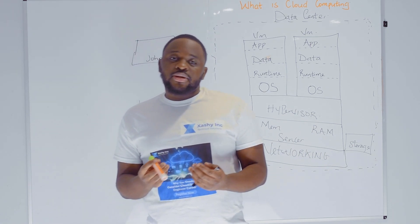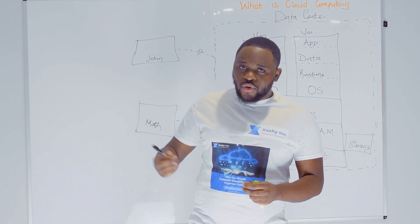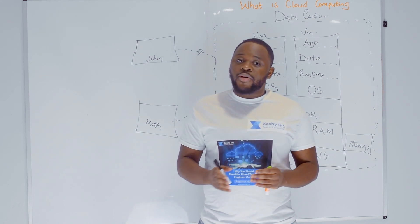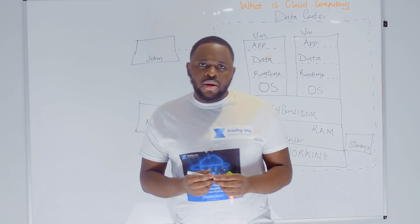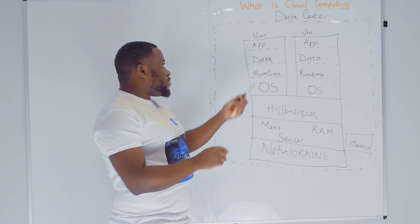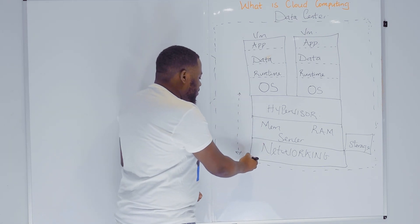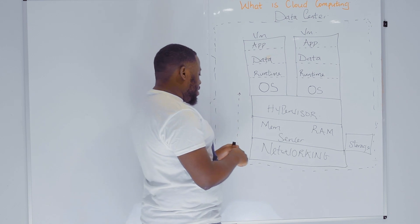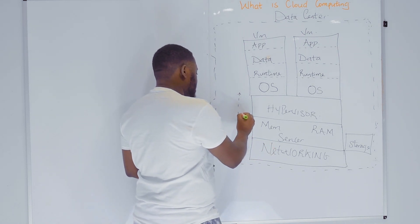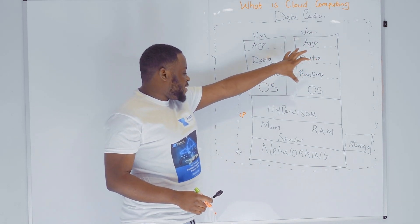These models are known as service delivery models, and they include platform as a service, infrastructure as a service, as well as software as a service. So any service you're using from any of the cloud providers is going to fall underneath one of these three categories. We have to understand that from the networking all the way to the hypervisor, the cloud provider always manages that. Remember, cloud computing services are being hosted in data centers which are provided by the cloud provider.